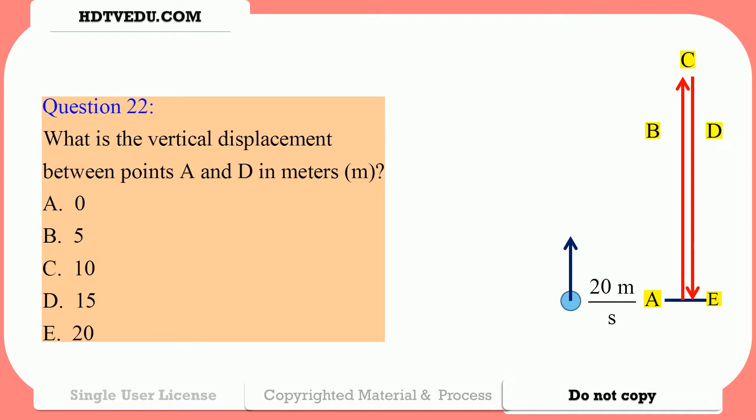Question number 22: What is the vertical displacement between points A and D in meters? 0, 5, 10, 15, or 20? Question number 23: What is the vertical displacement between points A and E in meters? 0, 5, 10, 15, or 20?